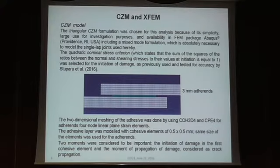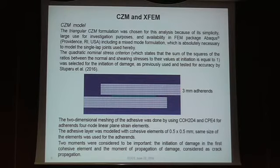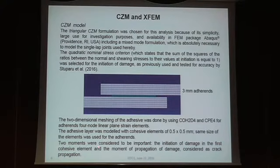Talking about finite element modeling, we had two steps in the analysis. On one hand, we had pure cohesive zone modeling, as presented here: one layer of adhesive having cohesive elements of 0.5 by 0.5 millimeters, shown here for the 3 millimeter thickness adherend. The steps of damage initiation — where the first cohesive element reached initiation — and then propagation were modeled.